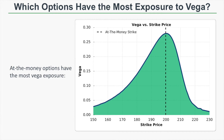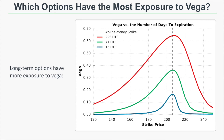Now let's talk about which options have the most exposure to vega. In this first visual, we're looking at vega at each strike price. The at-the-money strike price is 200, and the options with the most vega exposure are the at-the-money options. In-the-money and out-of-the-money options have lower vega exposure. This can be explained by the fact that at-the-money options have the most extrinsic value.